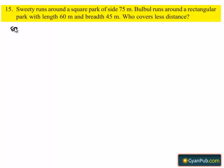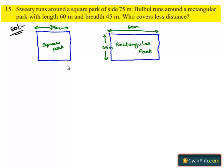Let's do a solution. First, consider a square park of side 75 meters and a rectangular park with length 60 meters and breadth 45 meters. Here is the square park and the rectangular park, given that Sweetie runs around the square park and Bulbul runs around the rectangular park. We have to find who covers the less distance.